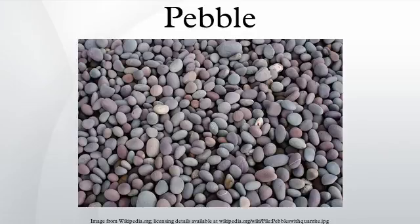A pebble is a clastic rock with a particle size of 2 to 64 mm based on the Krumbein Phi scale of sedimentology. Pebbles are generally considered larger than granules and smaller than cobbles. A rock made predominantly of pebbles is termed a conglomerate. Pebble tools are among the earliest known man-made artifacts, dating from the Paleolithic period of human history.